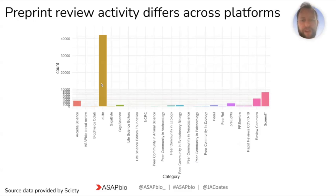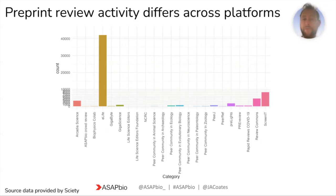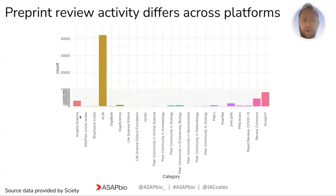Review activity also differs across platforms. eLife, for the life sciences, is currently doing a huge amount of the peer review activity — you could argue whether they're a journal anymore, as they now see themselves more as a preprint review service. Screen-it is an automated tool, Review Commons is an independent pre-review service, PREreview is a very much community-led peer review service, and Arcadia Science — a bioscience company in the US with a huge focus on open science — has incredible numbers of preprint reviews.